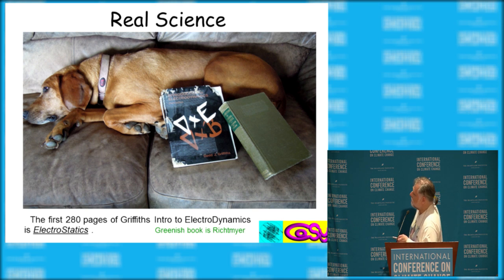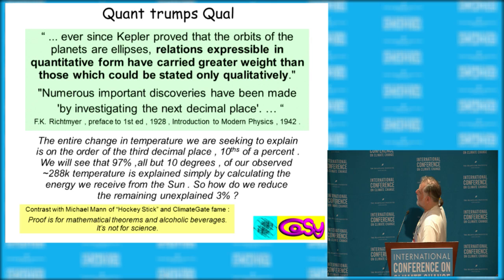Real science: this is my niece's electrodynamics book, which I finally got through. But one of the points is it spends the first 280 pages on electrostatics. And this greenish book is a classic by a guy named Rich Meyer. And in 1928, he said, ever since, the real point is to be quant trumps qualitative.